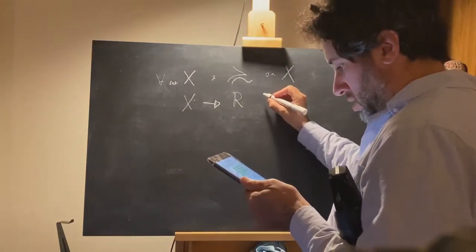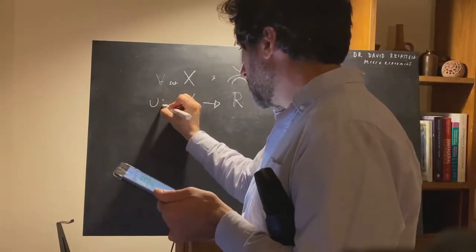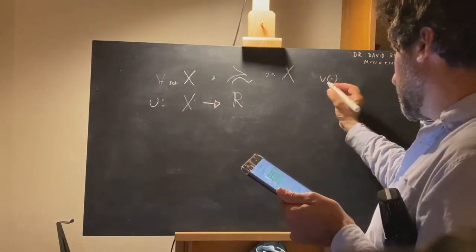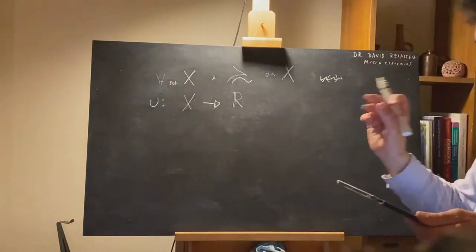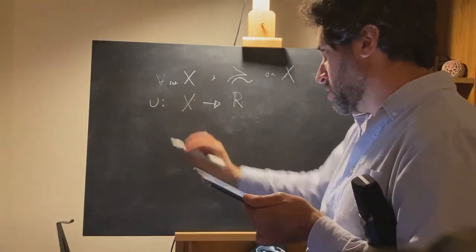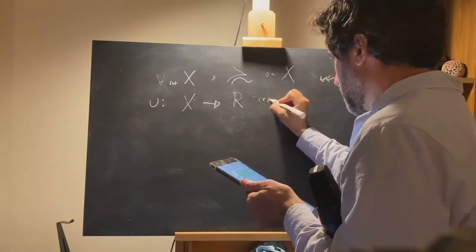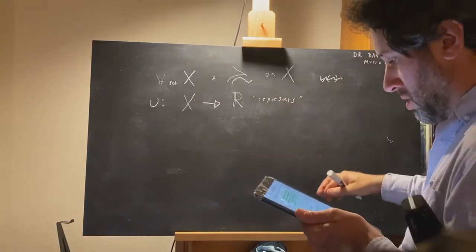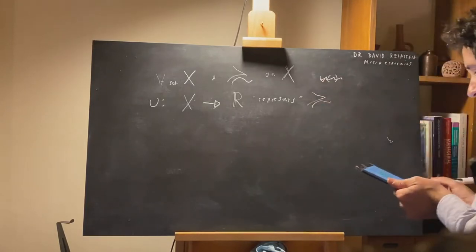So this function u, sometimes you see people write it as u with an argument, but we're just going to call functions, at least following Osborne and Rubenstein, by just giving it a letter, u. u maps from X to R, we say it represents the preference ordering.